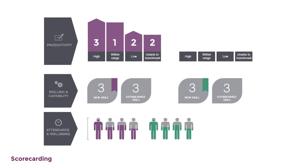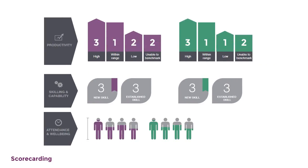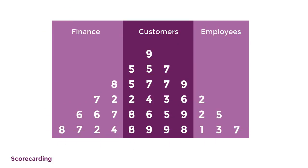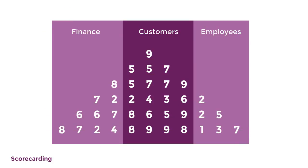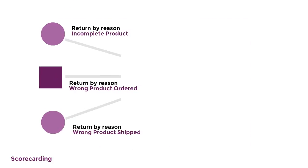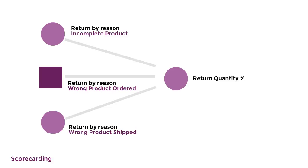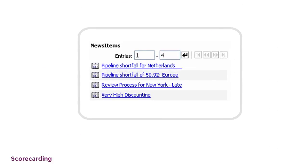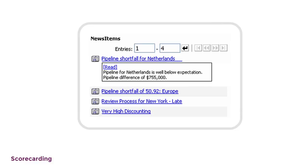Set priorities and track progress for employees and departments. Align capital allocations with business objectives. Create strategy maps and impact diagrams. Define automatic alerts and actions when acceptable performance levels are breached.